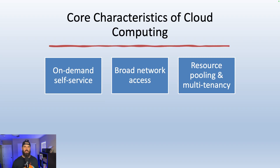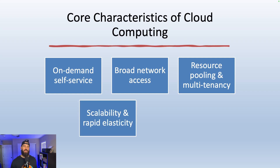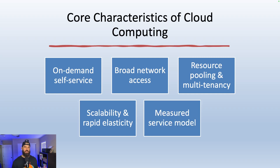With resource pooling and multi-tenancy, cloud providers use shared physical infrastructure to serve lots of customers. With scalability and rapid elasticity, if traffic spikes, the system scales with it and shrinks when demand drops — this happens automatically in modern applications. And finally, it's a measured service, which means you only pay for what you use, just like water and electricity. These characteristics are what allow modern apps like streaming platforms, food delivery services, and chatbots to launch quickly and serve people all over the world.